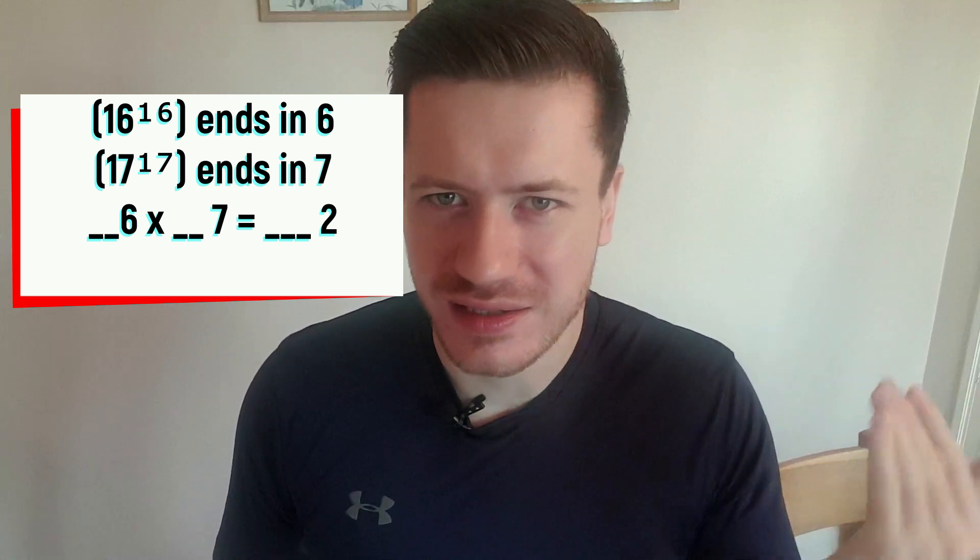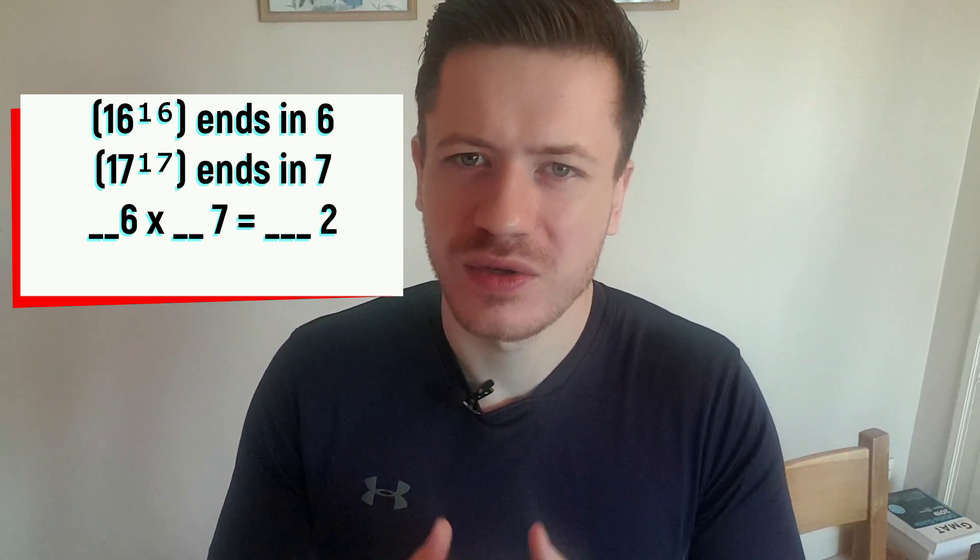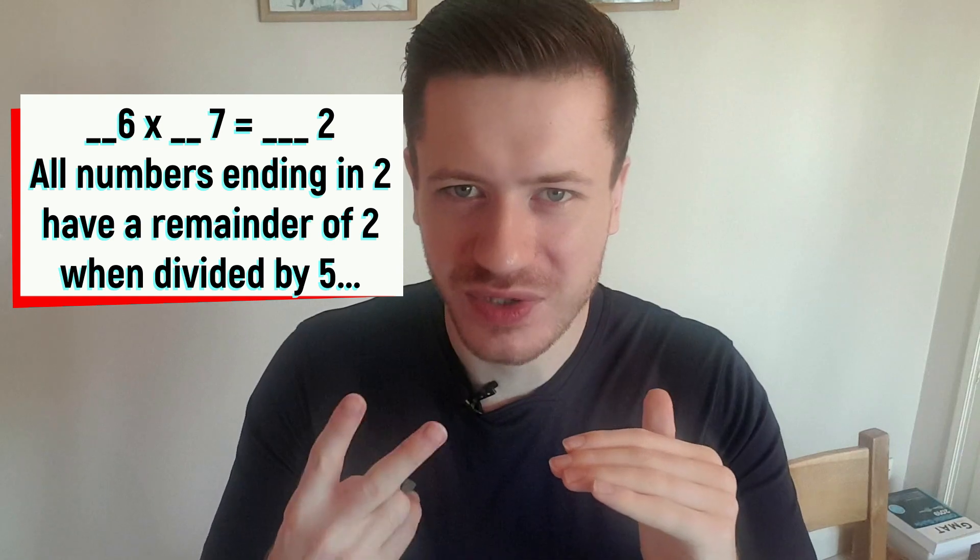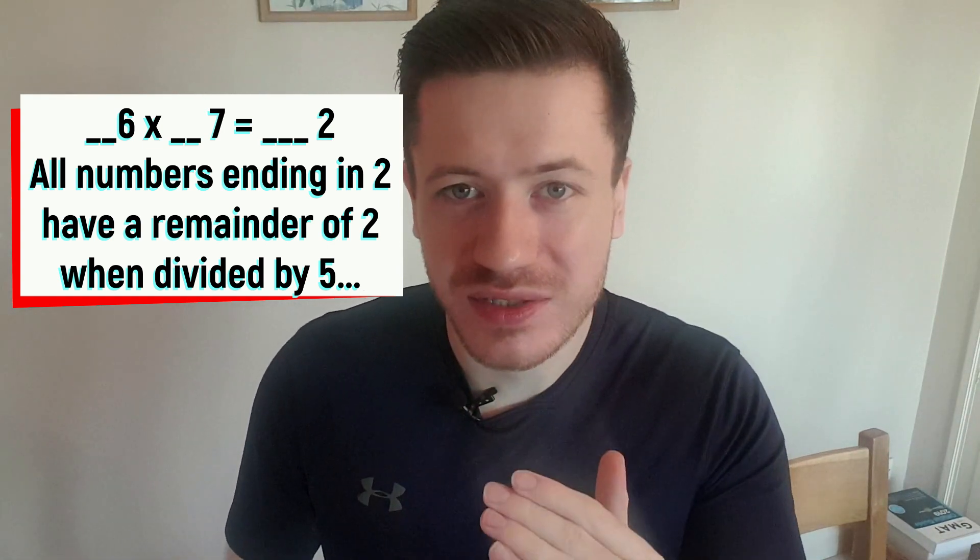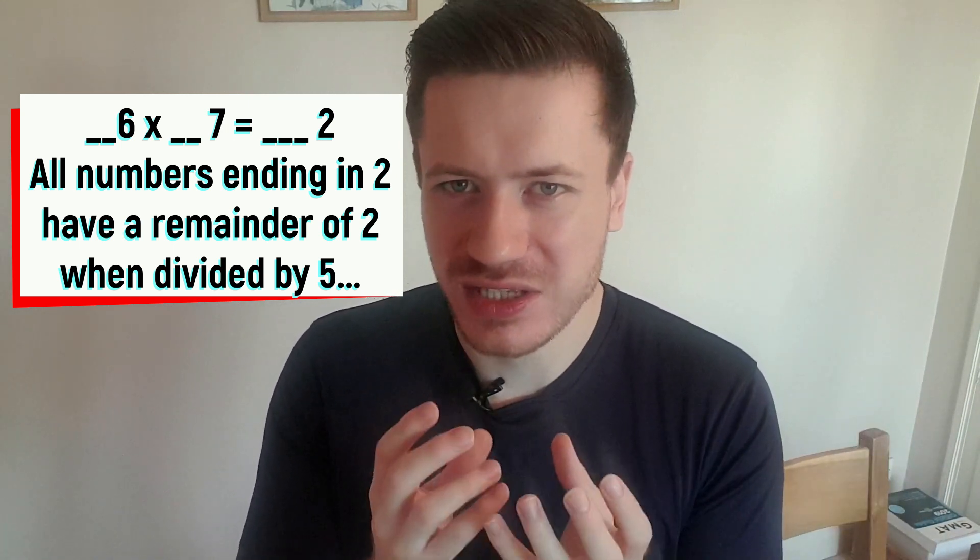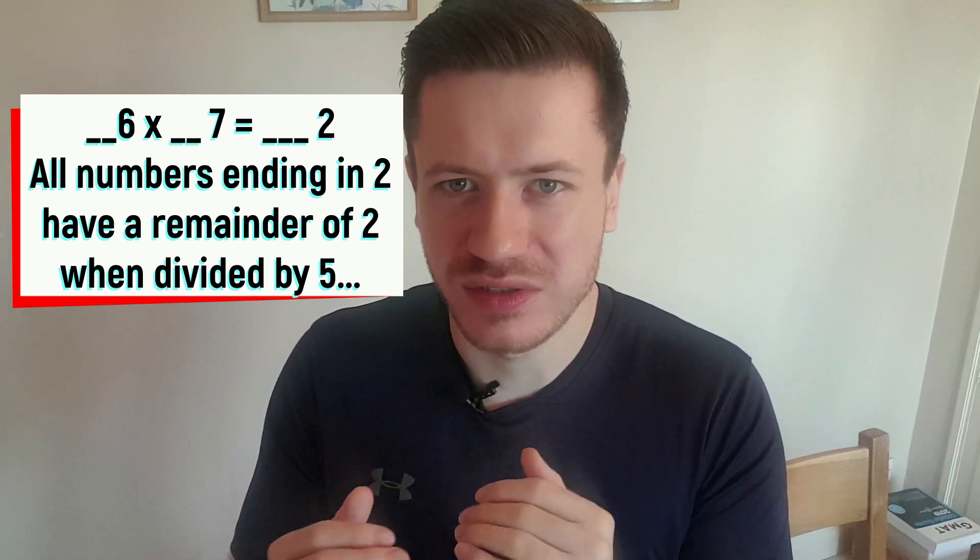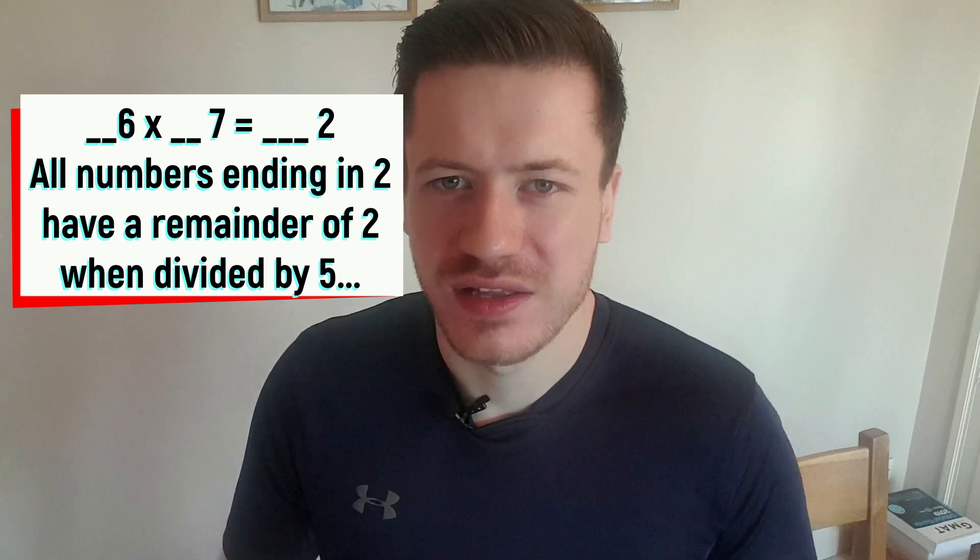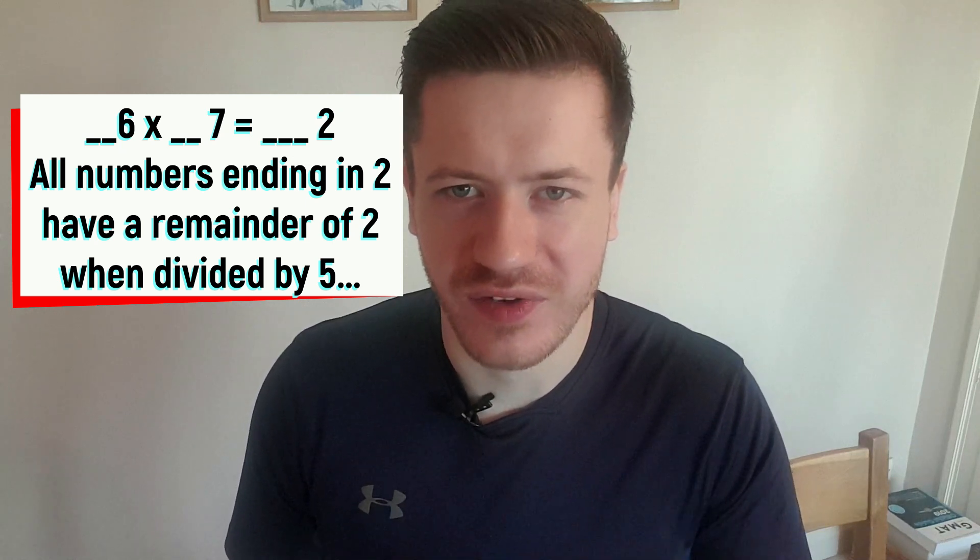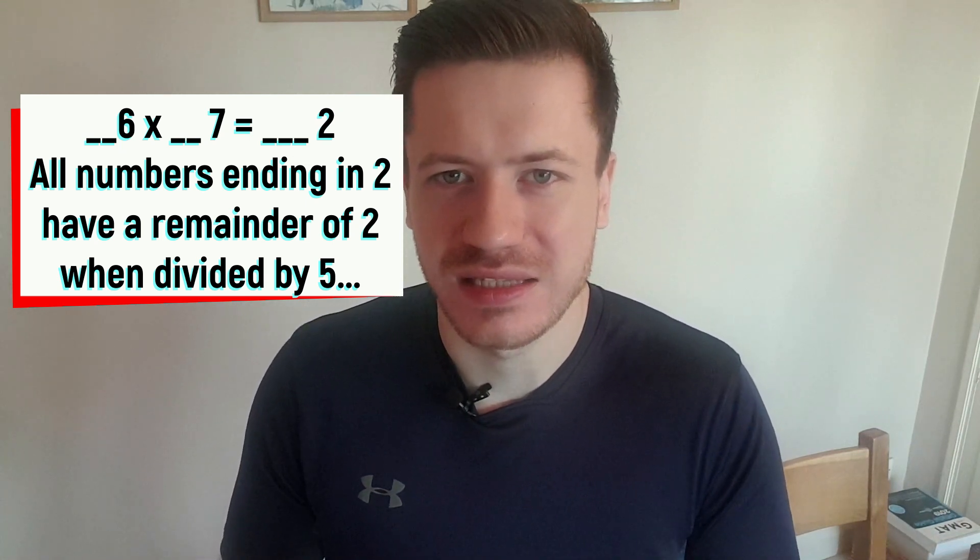But what about the actual question? What's the remainder when this answer is divided by five? That kind of makes it much harder, right? Well, not really. All numbers ending in a two have a remainder of two when they're divided by five. Think about it. The number 12 has a remainder of two when you divide it by five. The number 22 has a remainder of two when you divide it by five. It seems like a really hard extra facet of the question, but actually it's quite a simple way to finish off the question. If you divide that answer by five, the remainder is going to be two because numbers ending in a two always have a remainder of two when you divide them by five. So the final answer to the question is the remainder is two.